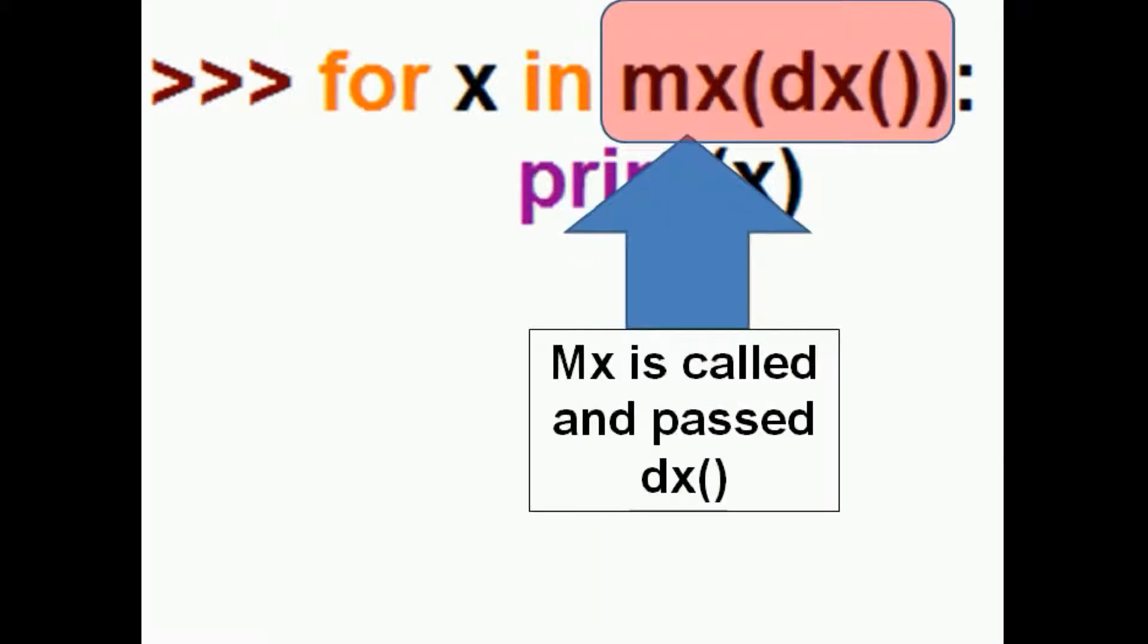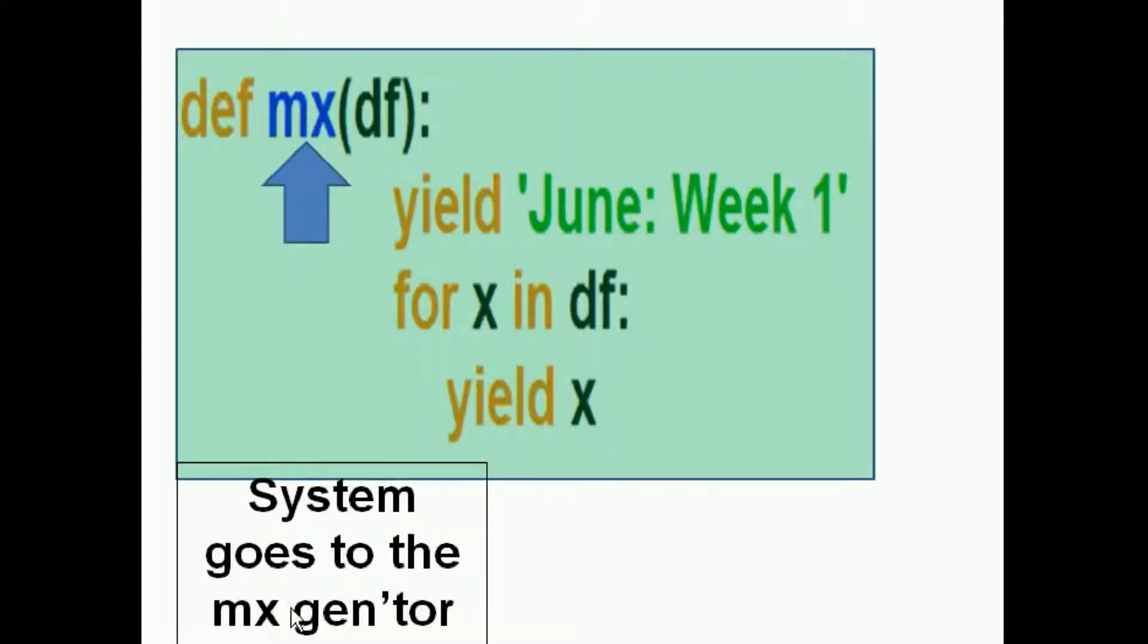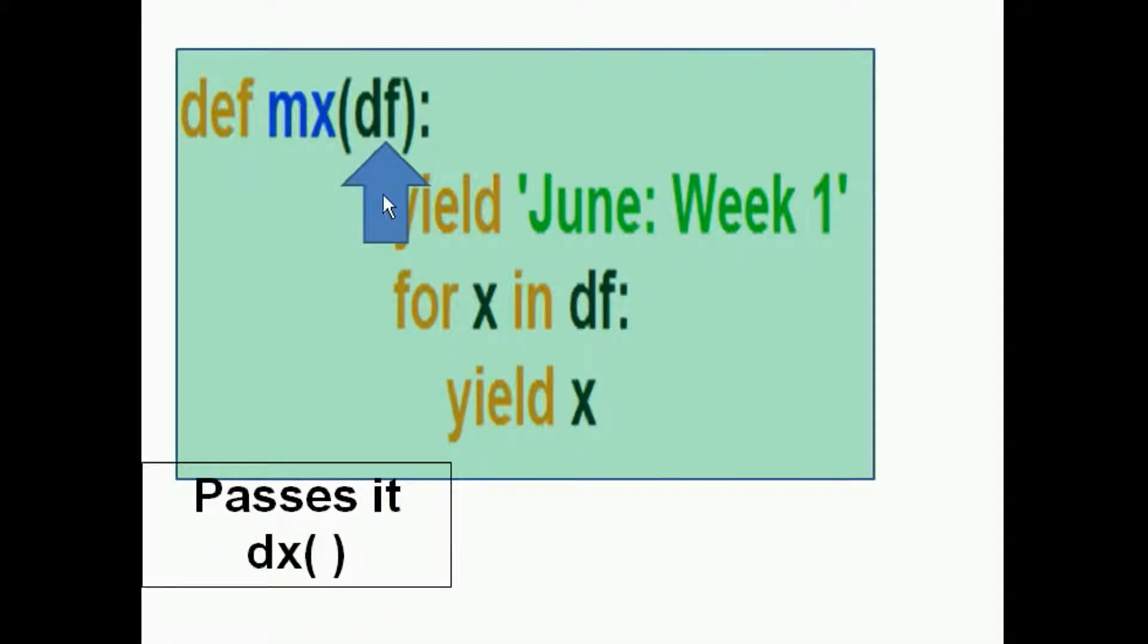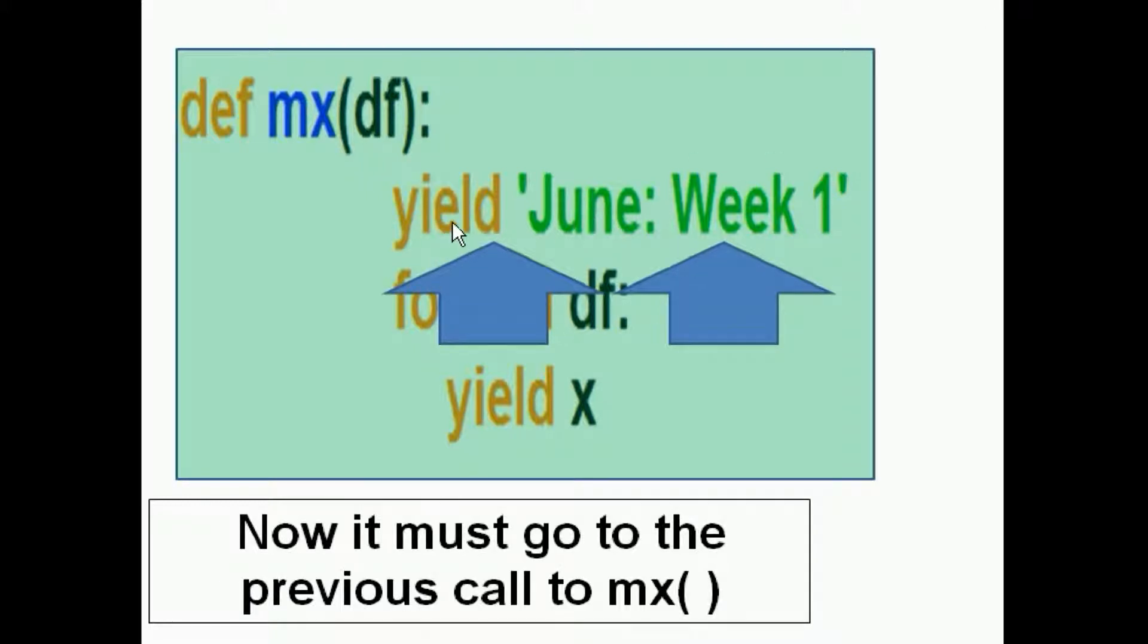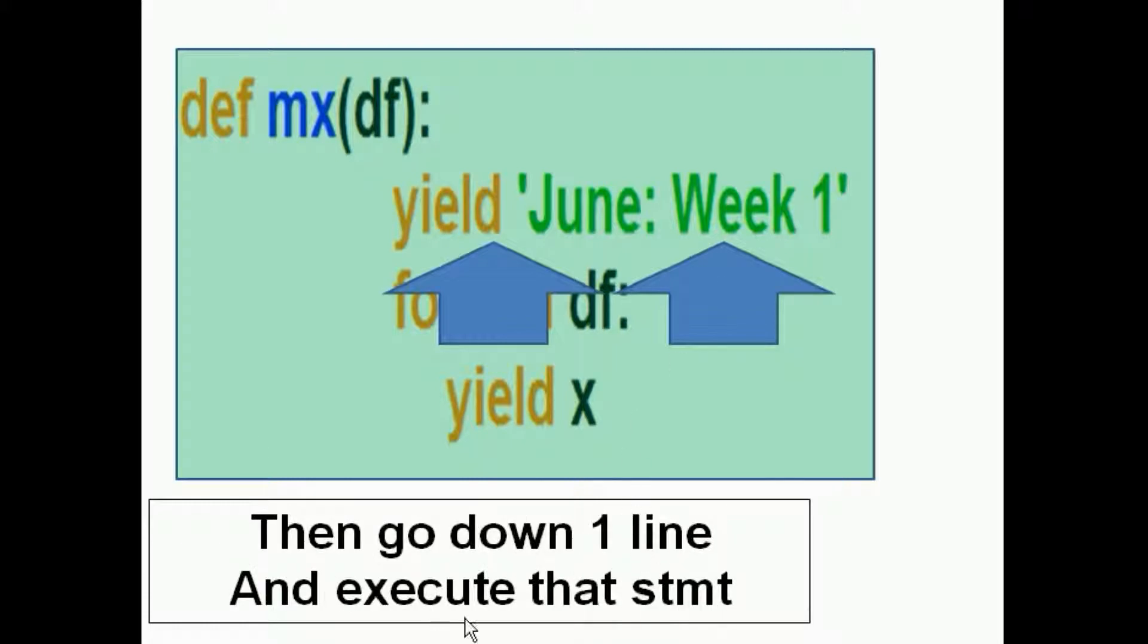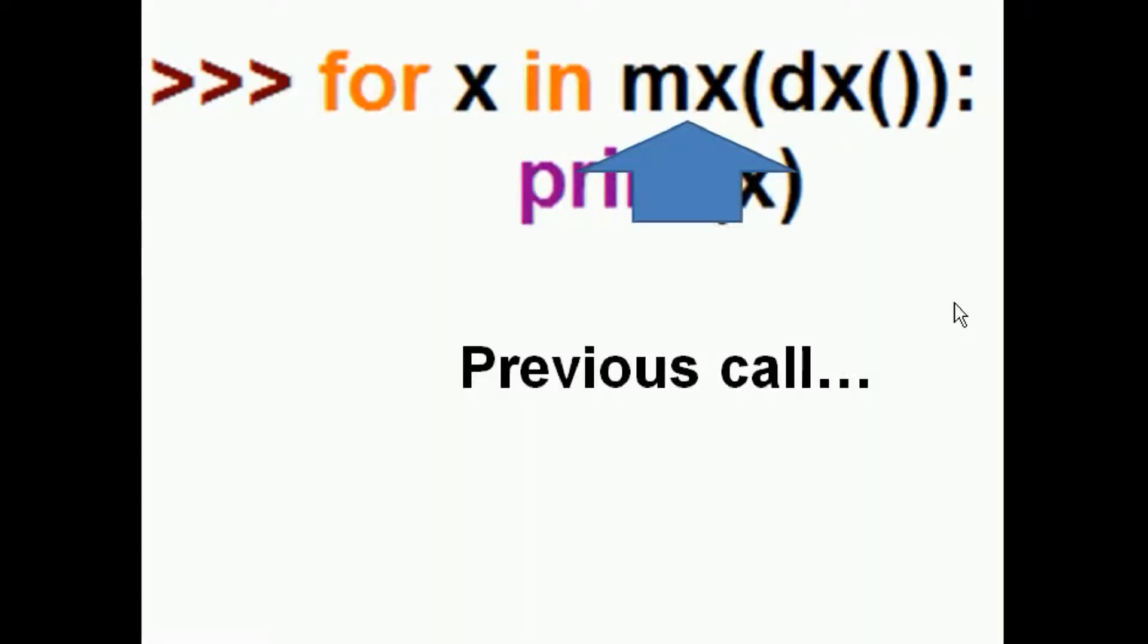Well, here's where we start. MX is called and passed DX. So the system goes to the MX generator function and passes it DX, which is caught here on the DF variable. And the first thing it does is it yields this string. Well, as soon as it runs into a yield, now it has to do the following. It must go back to the previous call to MX, to whatever line that is that called MX, and then go down one line and execute that statement.